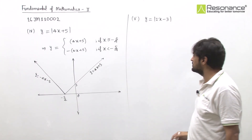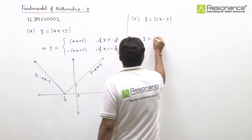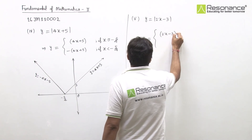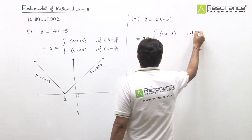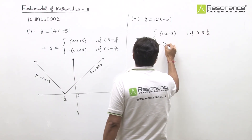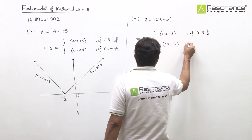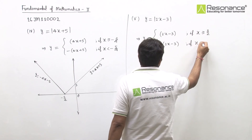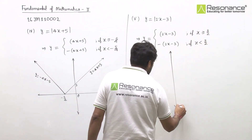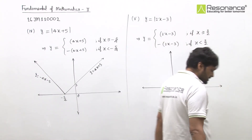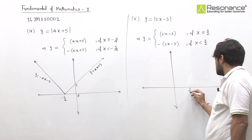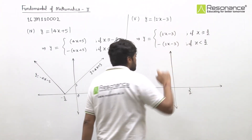At x = 3/2, the value is zero. Defining it: for x greater than 3/2, open with plus — 2x minus 3; for x less than 3/2, open with minus — minus(2x minus 3). The turning point is at x = 3/2 where the graph turns.